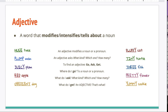Huge, like a huge tree. Plump man. Juicy plum. That tells what kind of plum it is. Red apple. That one is a which one, the red apple. Obedient dog. Fluffy cat. Tiny turtle. Here's an example of a number adjective that tells how many: three fish. Pretty flower or yummy cookie.